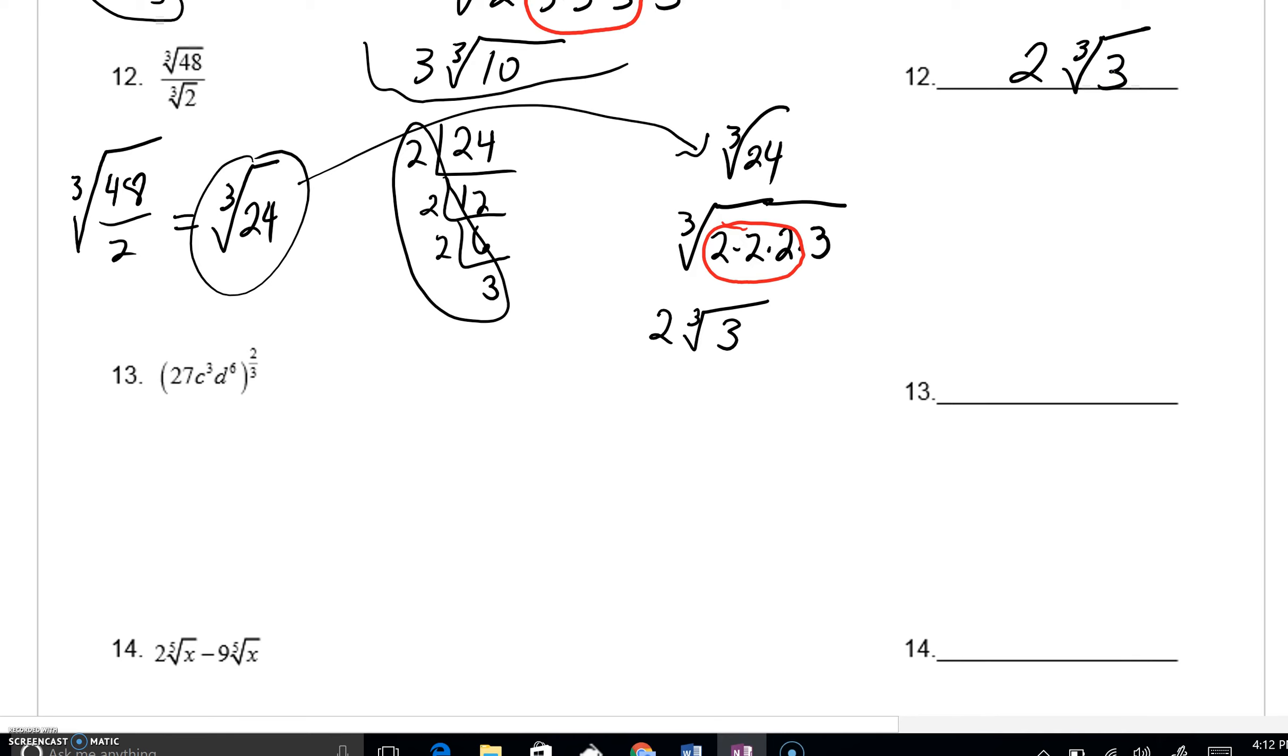For number 13, we're going to apply that 2 thirds power to the 27. We'd get 27 to the 2 thirds. Here we'll have 3 times 2 thirds, powers to powers with that C. D is raised to the 6th power, but powers to powers get multiplied.